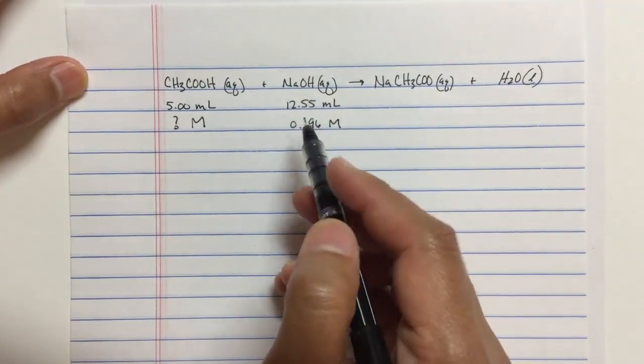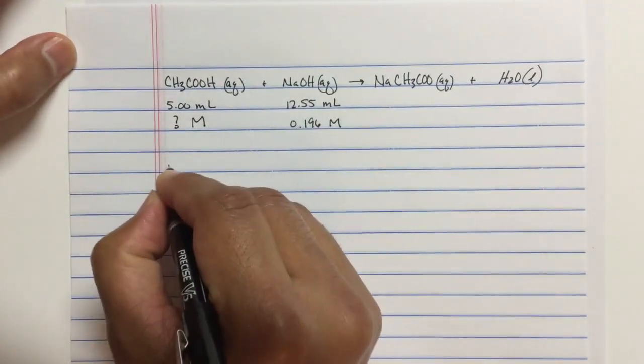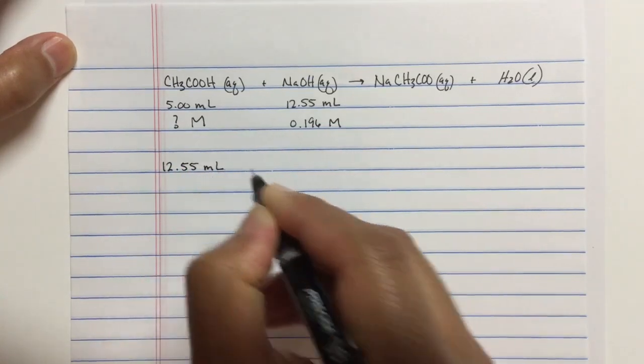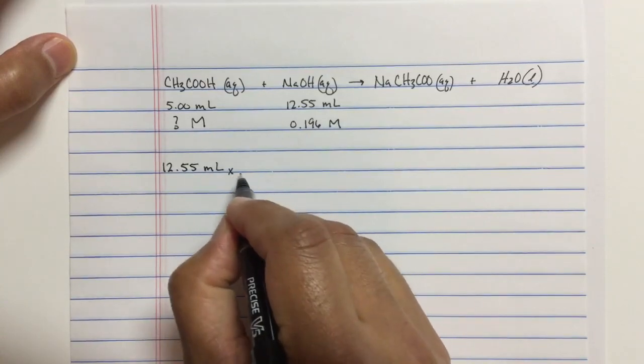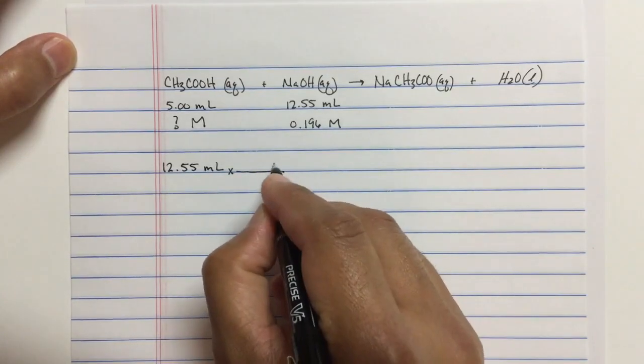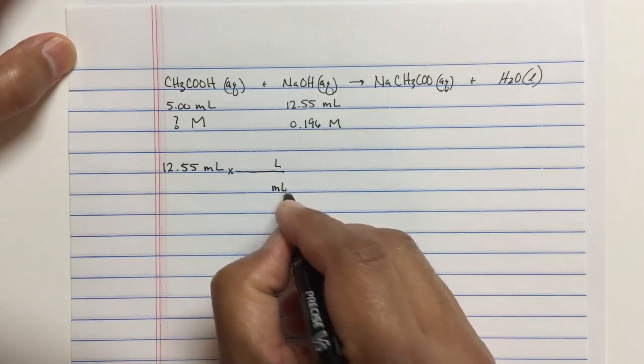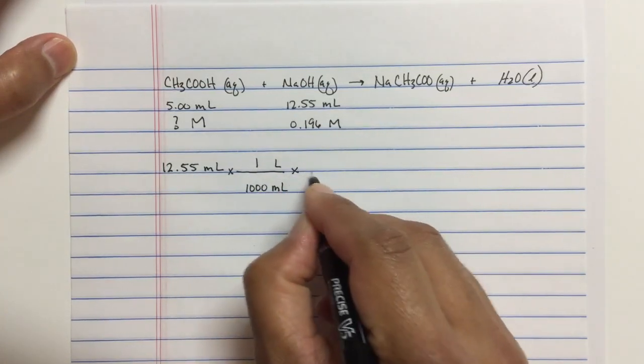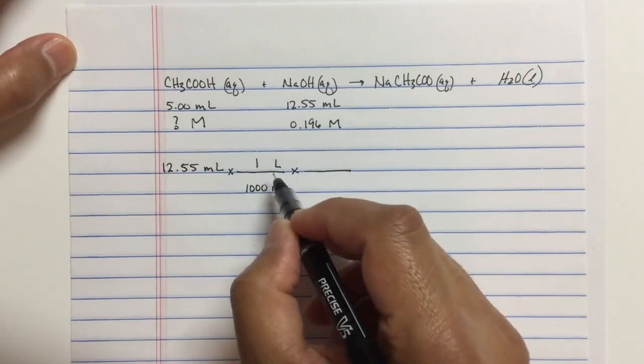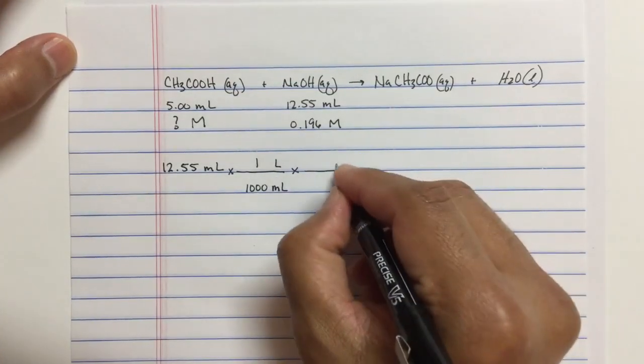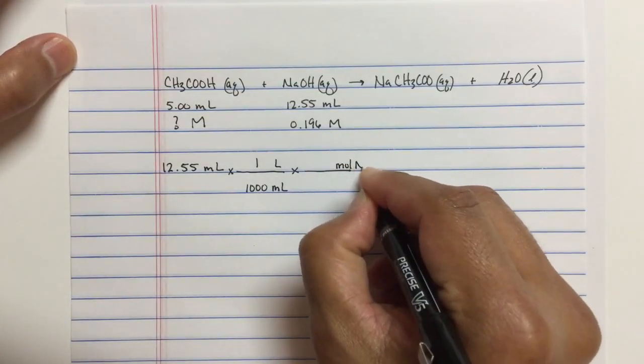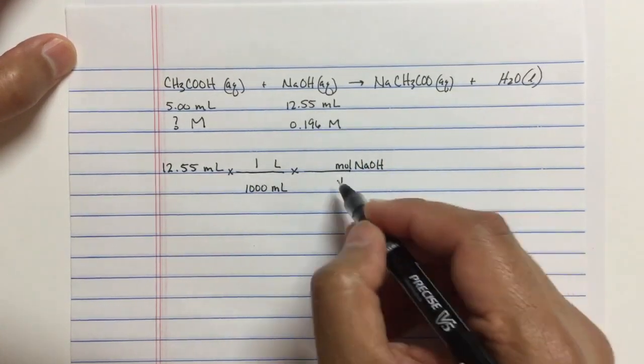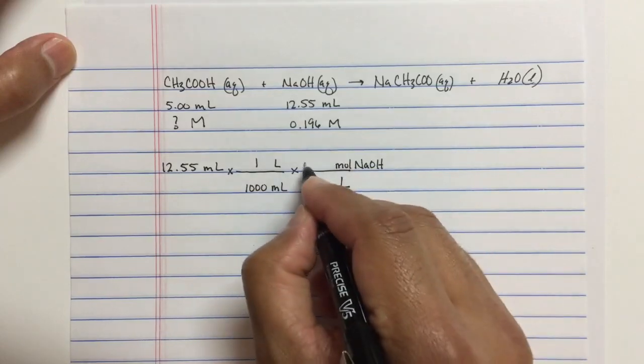Okay. So for the sodium hydroxide, we start with our volume. And we want to convert this to moles. So you've practiced this already. Let's convert the milliliters to liters. And once we're there, we can convert liters to moles of NaOH. And we can cancel liters. The mole per liter, of course, is the molarity.